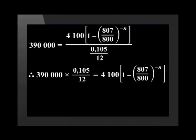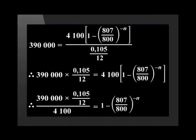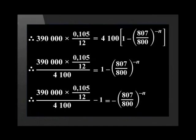Using a calculator, we can simplify 1 plus 0.105 divided by 12 is equal to 807 divided by 800. We need to get the base and the exponent on one side of the equation. We start by multiplying both sides by 1 plus 0.105 divided by 12. Then divide both sides by 4,100. Then subtract 1.